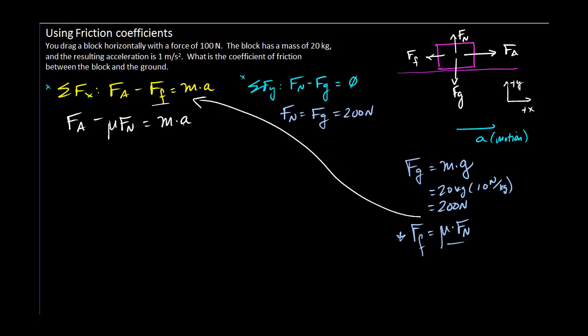Now I can substitute in some numbers. We know enough to solve this. We have the applied force. We're looking for the coefficient of friction. We found the normal force with our y direction equation. We're given the mass. We're given the acceleration. We know enough to solve this. So let's go ahead and do that.